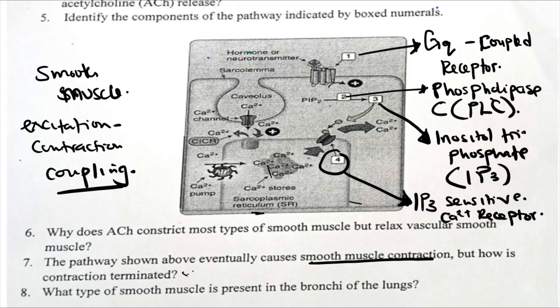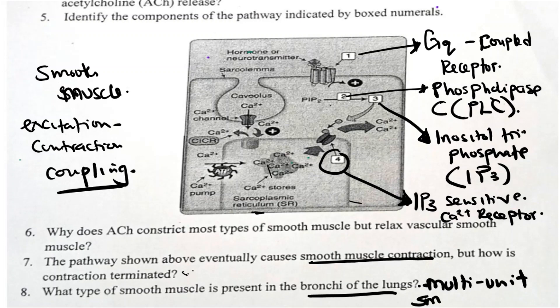Number eight: what type of smooth muscle is present in the bronchi of the lungs? It is called multi-unit smooth muscle. In hollow organs like the oesophagus, you find unitary (single-unit) smooth muscles, but in the bronchi, you find multi-unit smooth muscles.